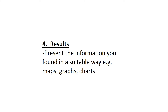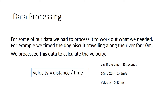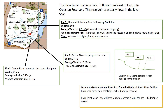Having collected the data, we then had to present our results, but first some data had to be processed. For example, in measuring velocity we'd written down the times it took the biscuit to travel 10 meters, so we had to process this to calculate the velocity: distance was 10 meters, time was whatever we'd recorded in seconds, and from that we could calculate the velocity and then work out the mean velocity for each of the three sites. This slide shows a summary of the processed data, but it's still not easy to see the patterns, so we wanted to find appropriate graphs or charts.